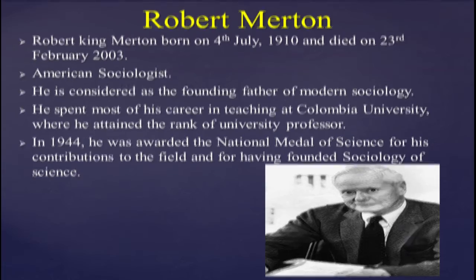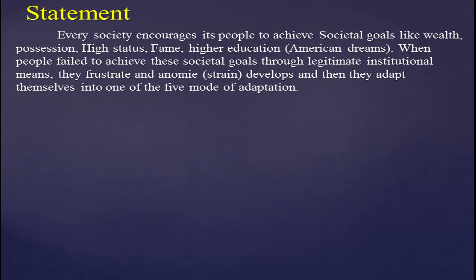Now let's start with the Robert Merton theory. First, let's understand the statement of the theory, because from this statement you will understand the theory as a whole and the upcoming slides will become easier. The statement is: every society encourages its people to achieve societal goals, like wealth, possession, high status, fame, and higher education.